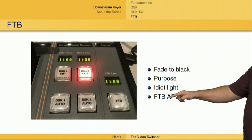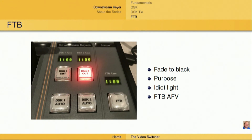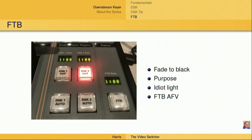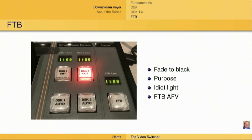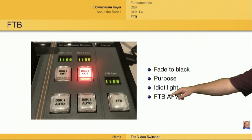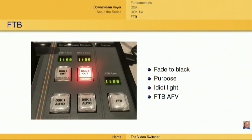Lastly, there is a setting in the menu system — which we cover in another video — called the FTB AFV setting. FTB is short for fade to black, and AFV is short for audio follow video. This is going to fade the audio as well as the video if we have audio running through the switcher. In other words, if we are using the switcher's audio system and encoding that audio on our video output, then if we have FTB AFV selected, as soon as we push the FTB button it's also going to fade the audio out at the same rate that it's fading the video.